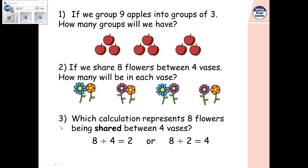Number three, which calculation represents eight flowers being shared between four vases? So use the numbers in your worded sentence here and see which one you think is correct. So hopefully you paused and had a little think. Well I know that it says eight flowers share between four vases. So I know it should be eight divided by four. And you were right if you selected that one as well.